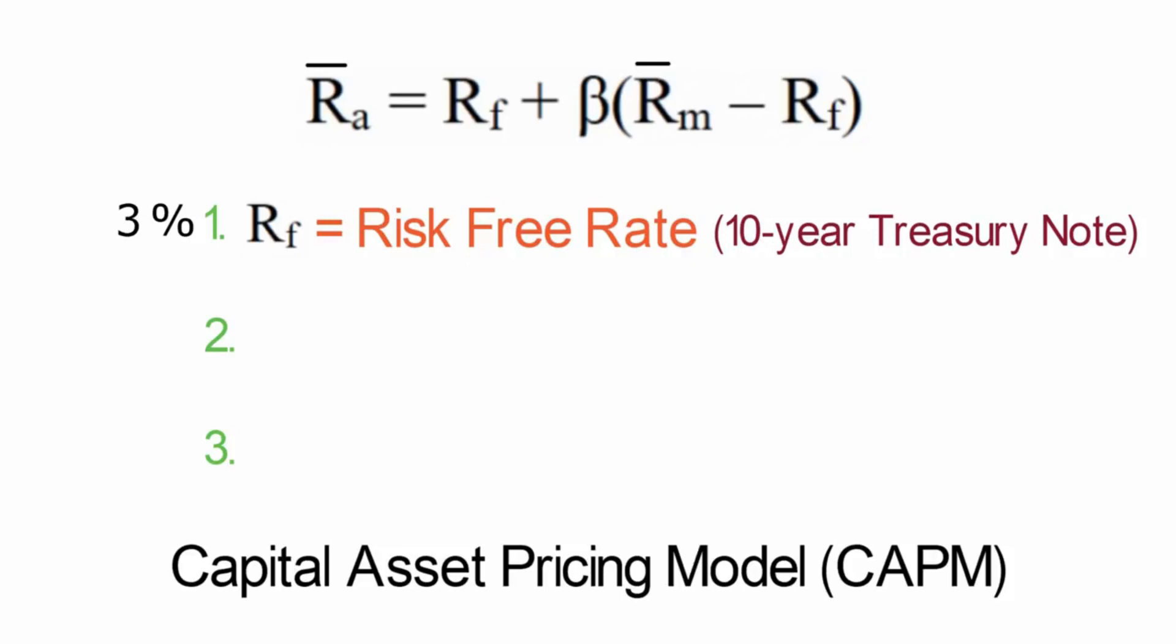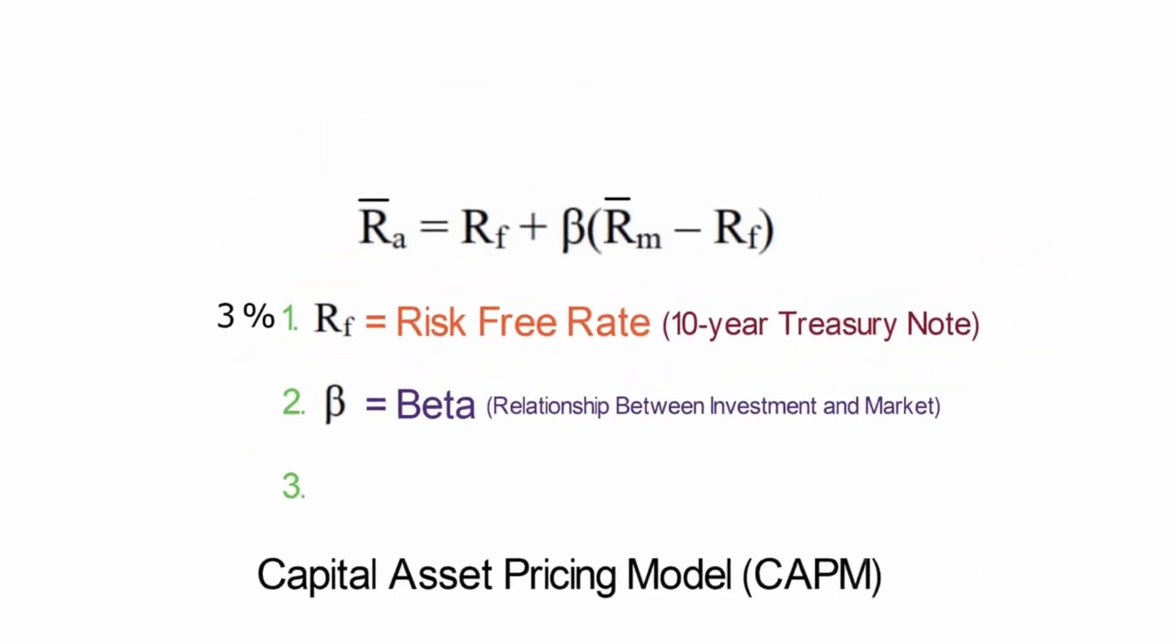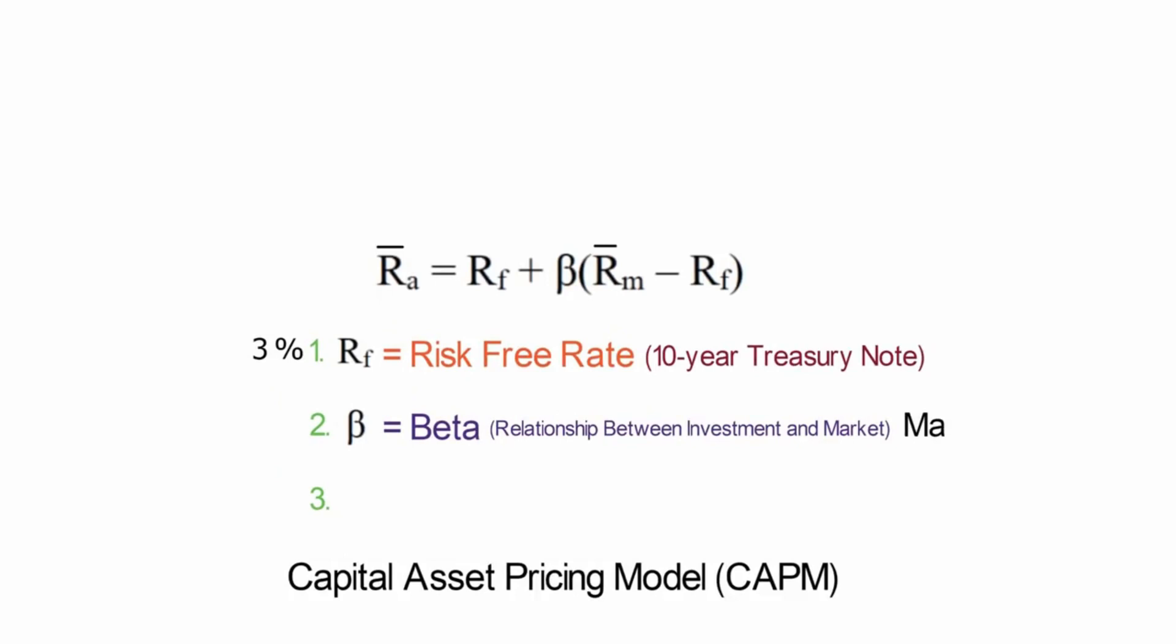The 10-year treasury note is about 3%. Next, we have beta. Beta looks at the relationship between our investment and the market. For our example, we use a stock. So for us, beta looks at how the stock moves compared to how the stock market moves. The market by definition gets beta of 1.